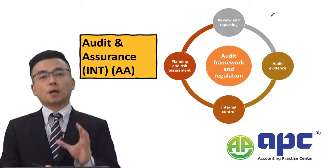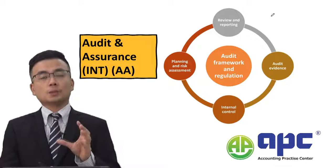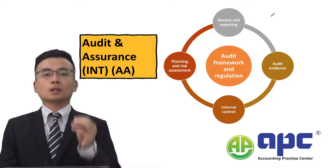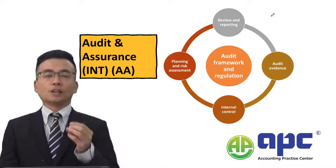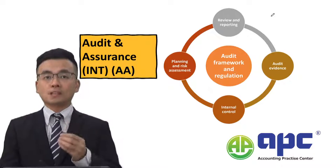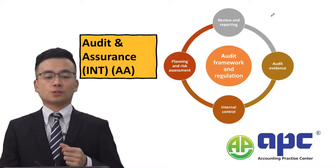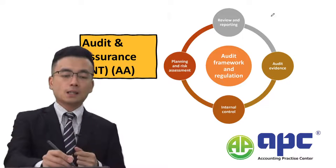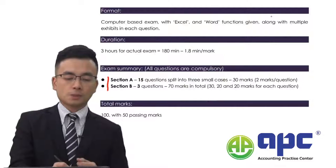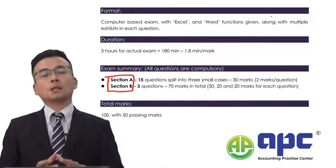The key to pass the AA is to cover the whole syllabus and make sure that you know the exact content within each ISA, so that you can better tackle the Section A multiple-choice questions. From the exam's point of view, the exam has been divided into Section A as well as the Section B questions.